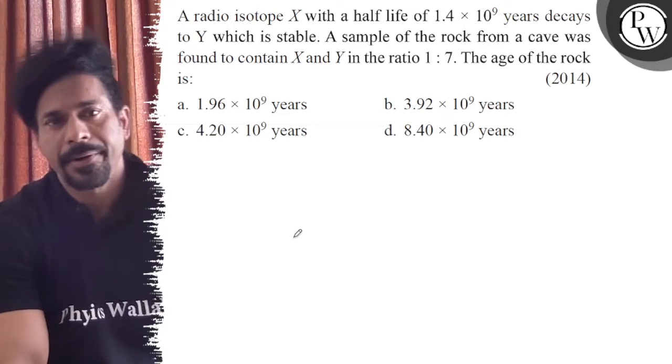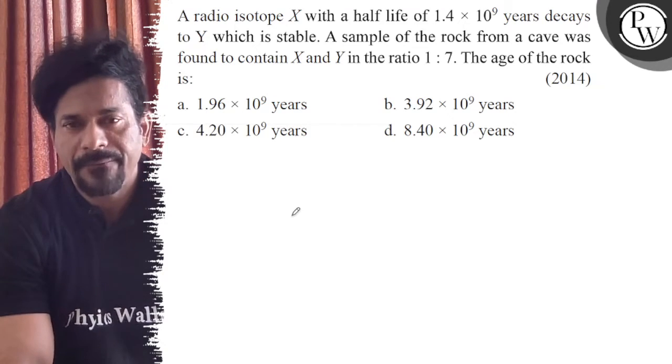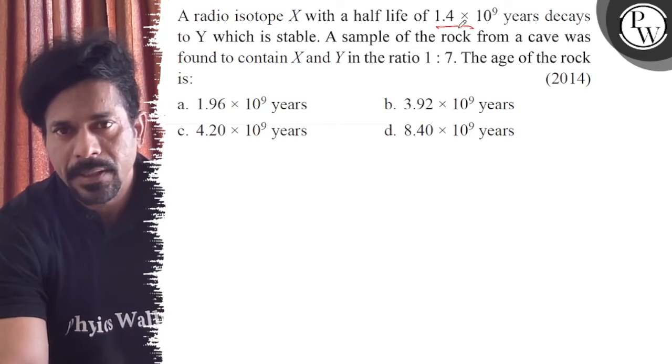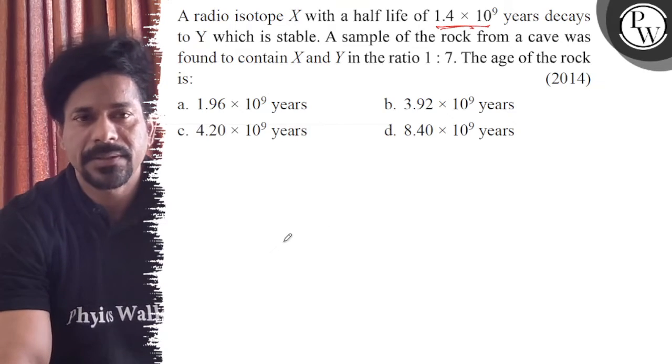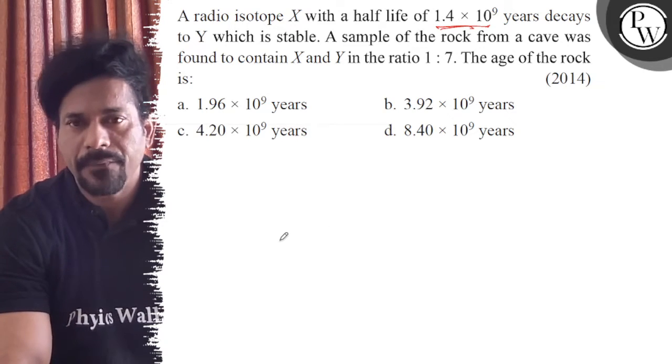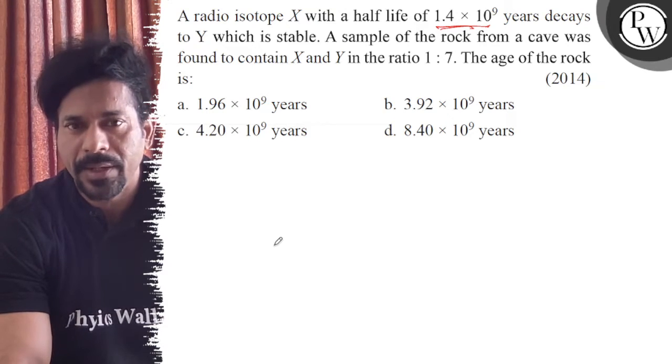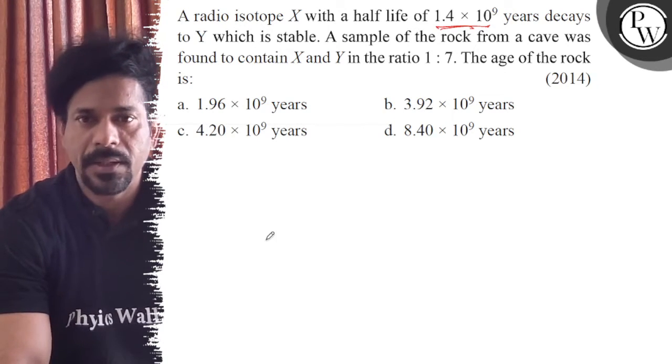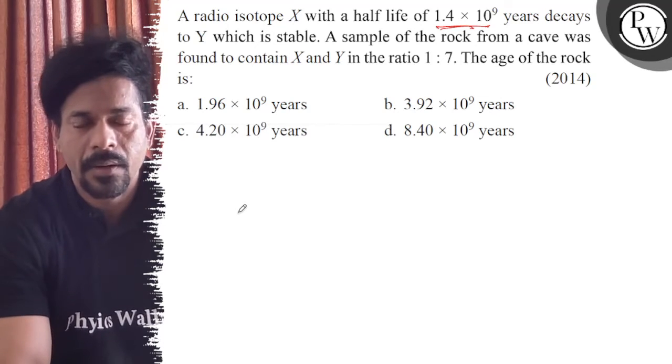Hello, let's see the question. A radioactive isotope X with a half-life of 1.4×10^9 years decays to Y which is stable. A sample of rock from a cave was found to contain X and Y in the ratio 1:7. The age of the rock is?